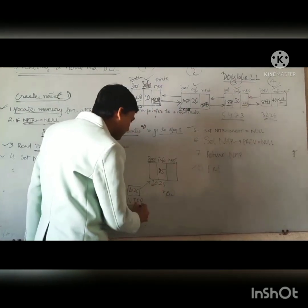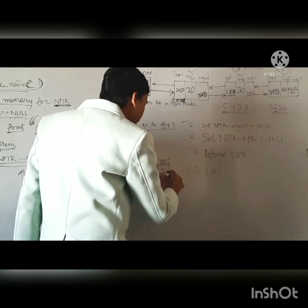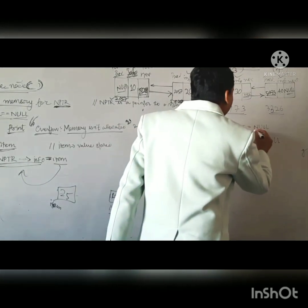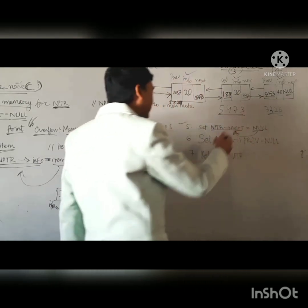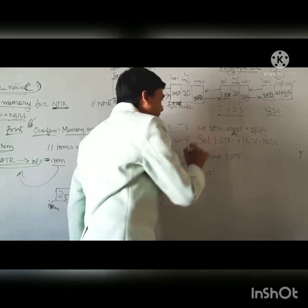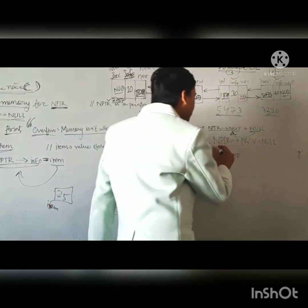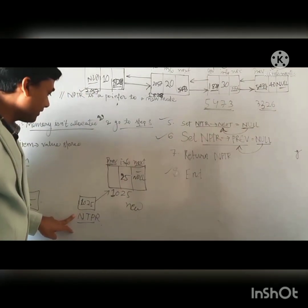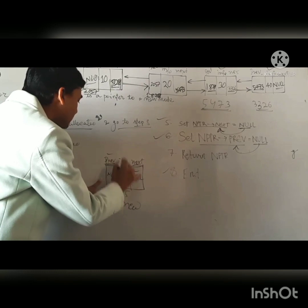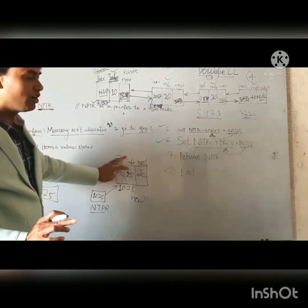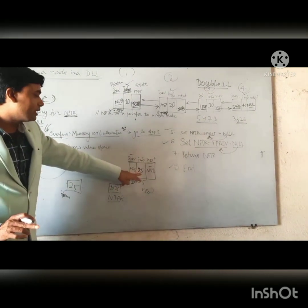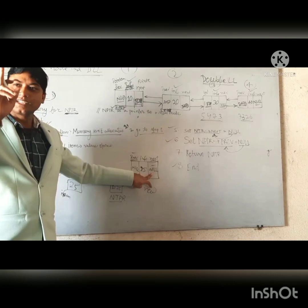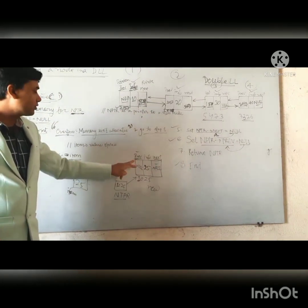Now, step five: set NPTR->next equal to NULL. I am setting an initial value. NPTR->next is equal to NULL, so NULL will be assigned to NPTR->next. Step six: NPTR->prev is equal to NULL. NULL will be assigned to NPTR->prev. Because it is a single node just created, and this node has three parts. The middle part is the information data storing 25. Next is the next pointer pointing to the next node in the list, but since there is no other node, it is NULL. And since there is no previous node in this list, it is also NULL.